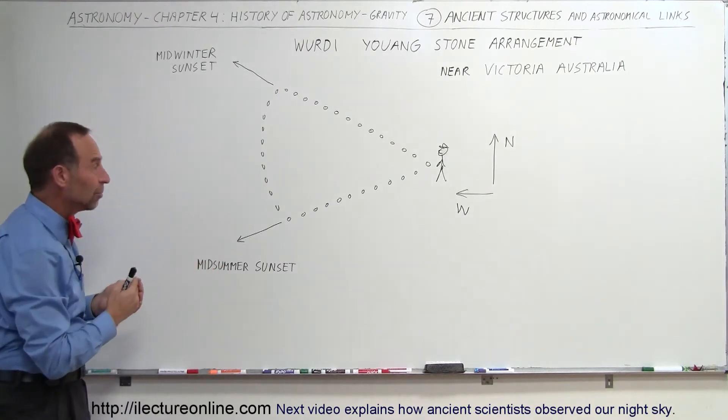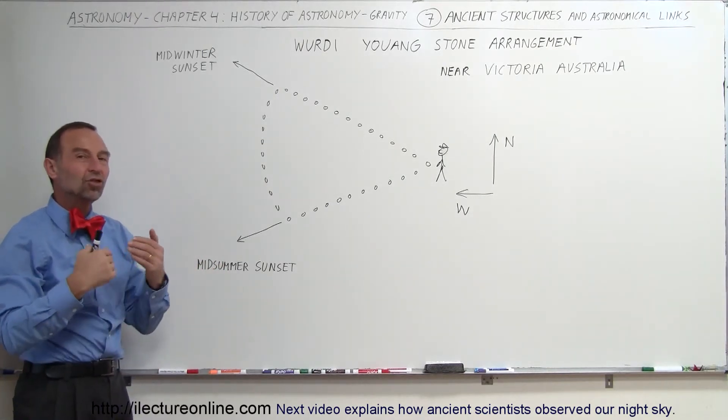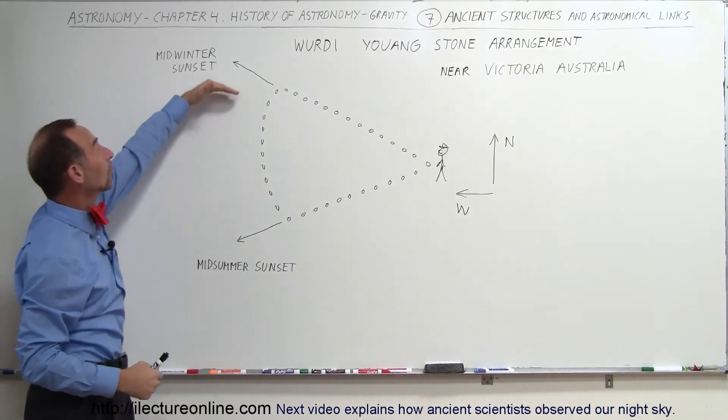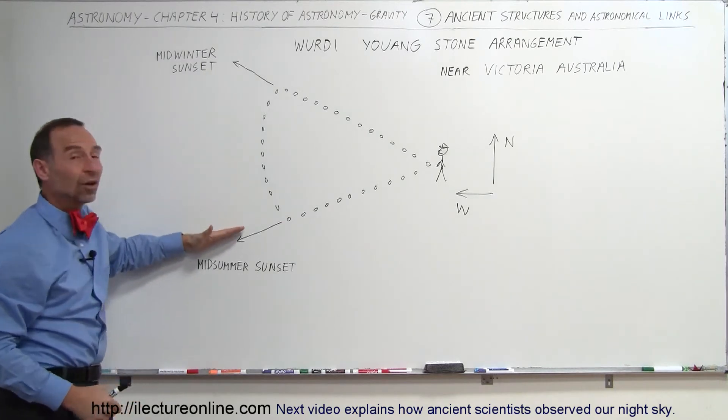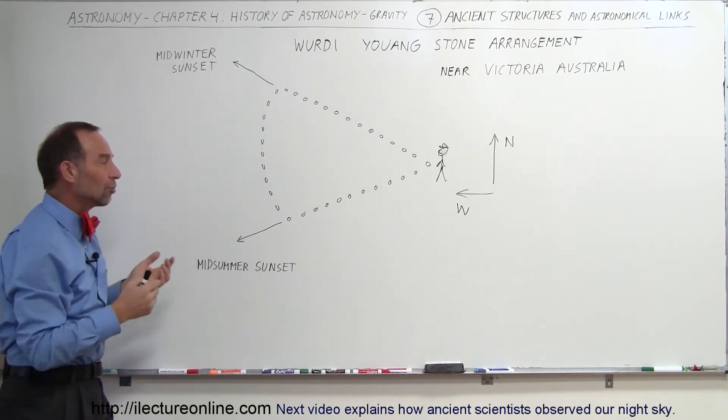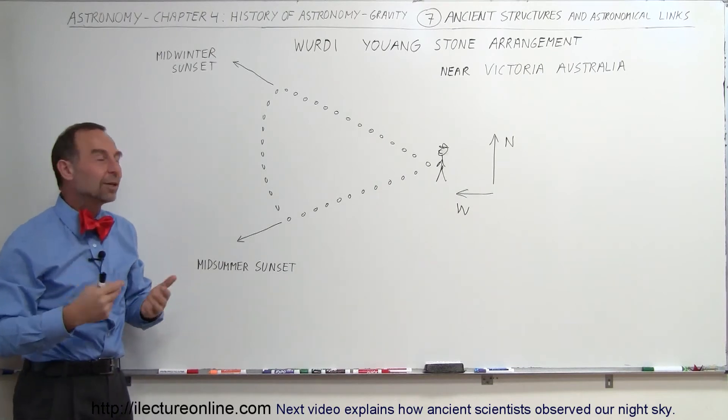They built this monument to keep track of the change of seasons, knowing when winter would come to an end and when summer would come to an end, to keep track of the seasons and what was changing on a yearly basis.